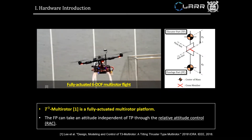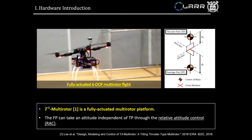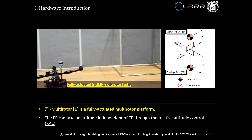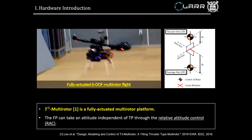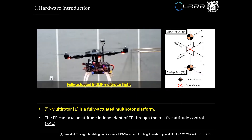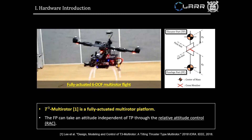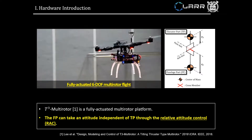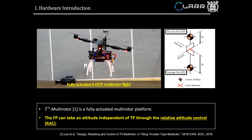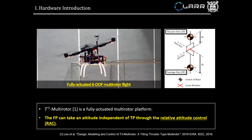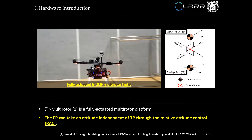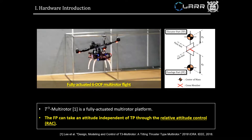First introduced in 2018, T3 multi-rotor is a fully actuated multi-rotor platform with two major parts, the TP and the FP, where the fuselage can take an arbitrary attitude through the relative attitude control, or RAC, between the two parts.